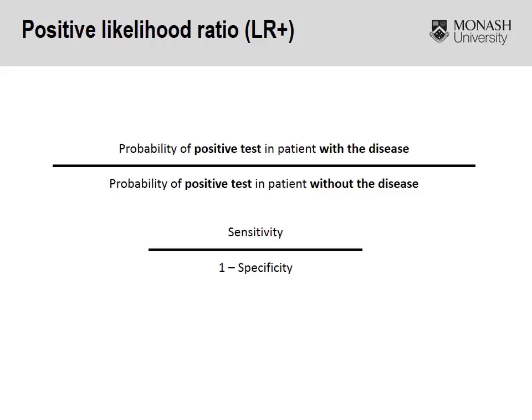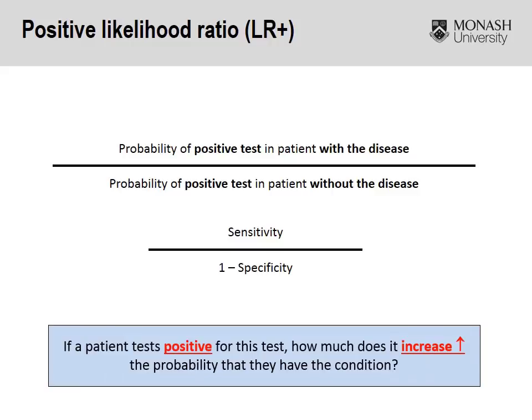Positive likelihood ratio, if you wanted to calculate it, would be sensitivity divided by one minus specificity. Basically, positive likelihood ratios are telling us: if a patient is positive for this particular test, how much does it increase the probability of them having the condition?